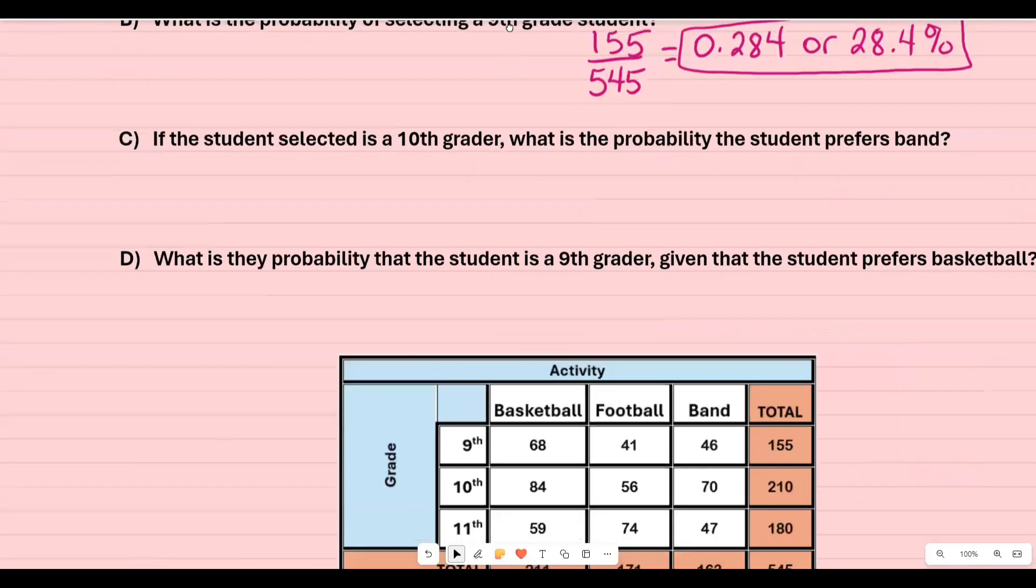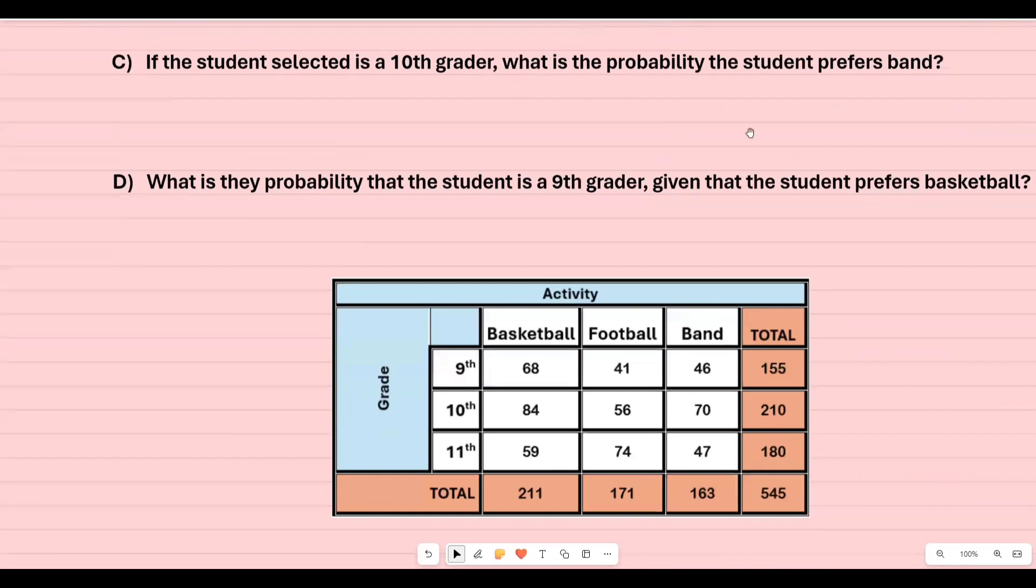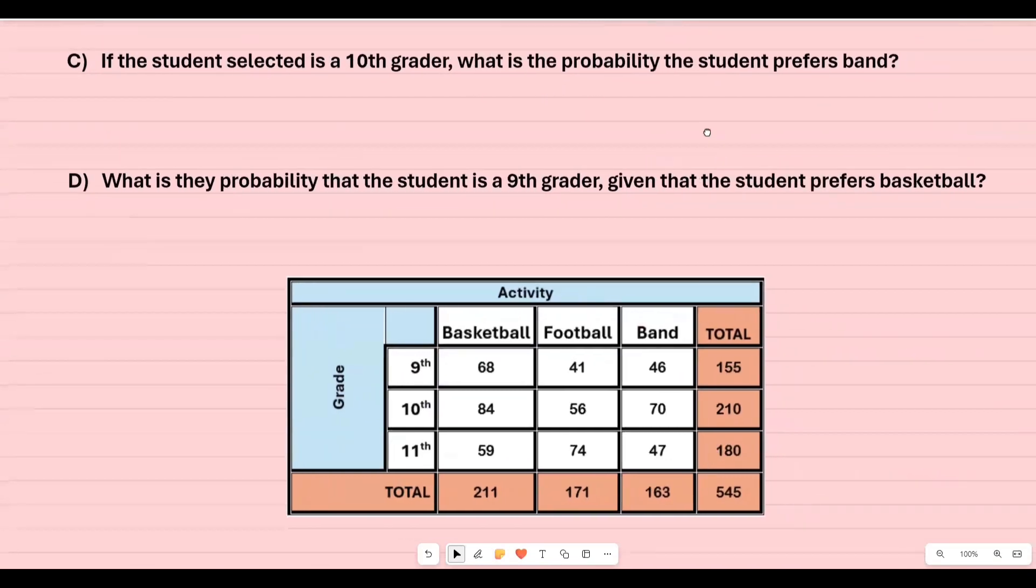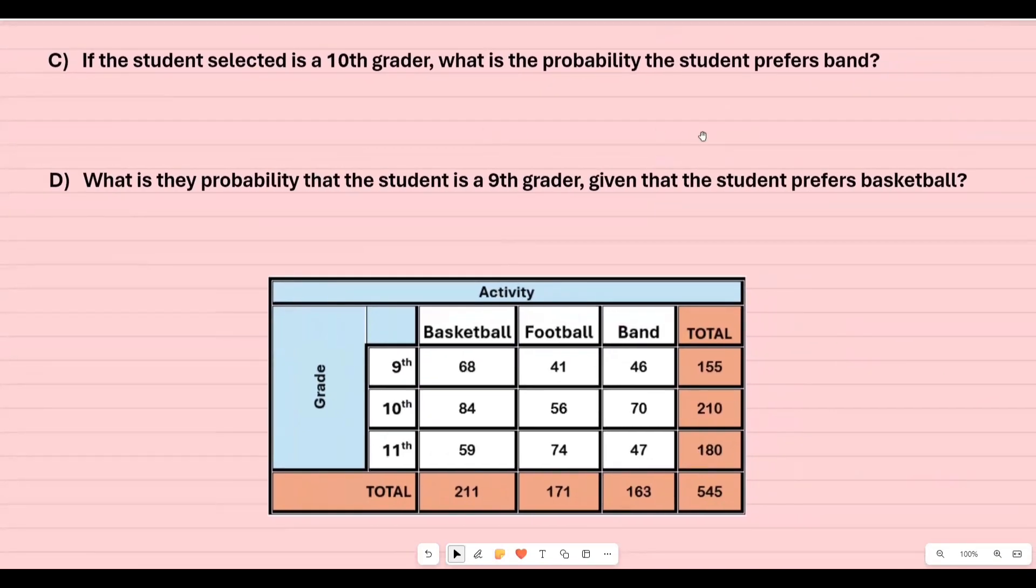For part c and d this is more the conditional, like if you were using that formula this is where you would see it more. Keywords that you want to look for are if and sometimes given. Sometimes they'll say given and sometimes they'll say if. You're looking for those words because that is what's going to be in your denominator. That is going to be your total.